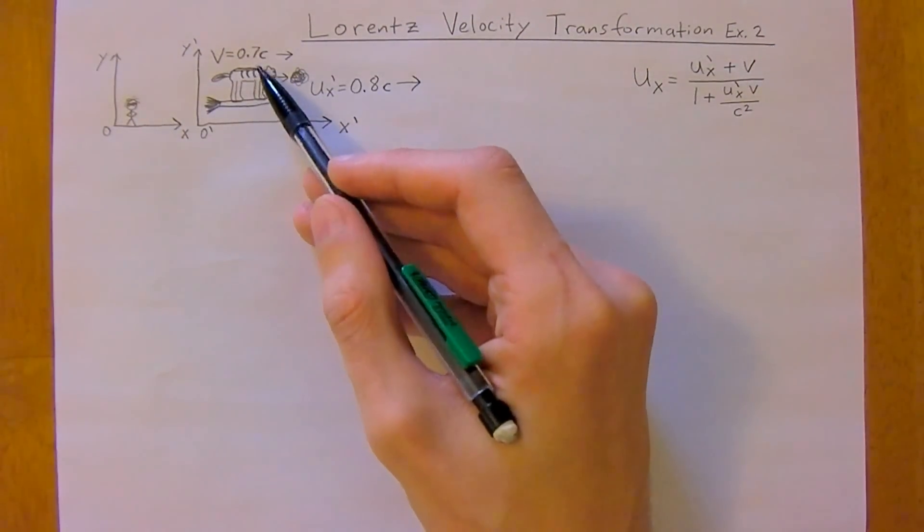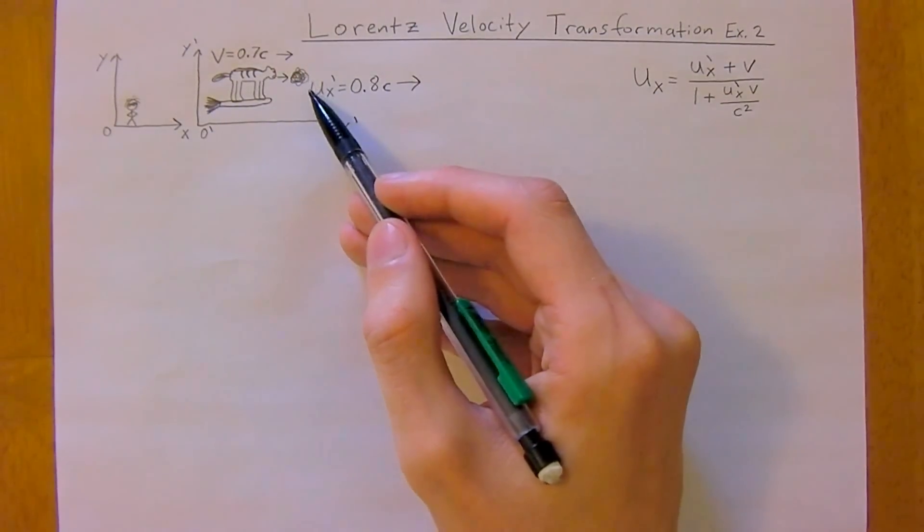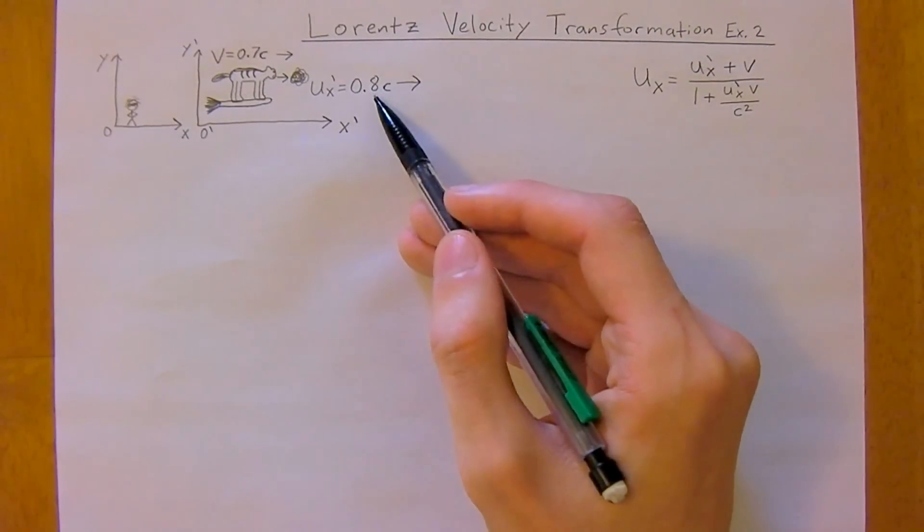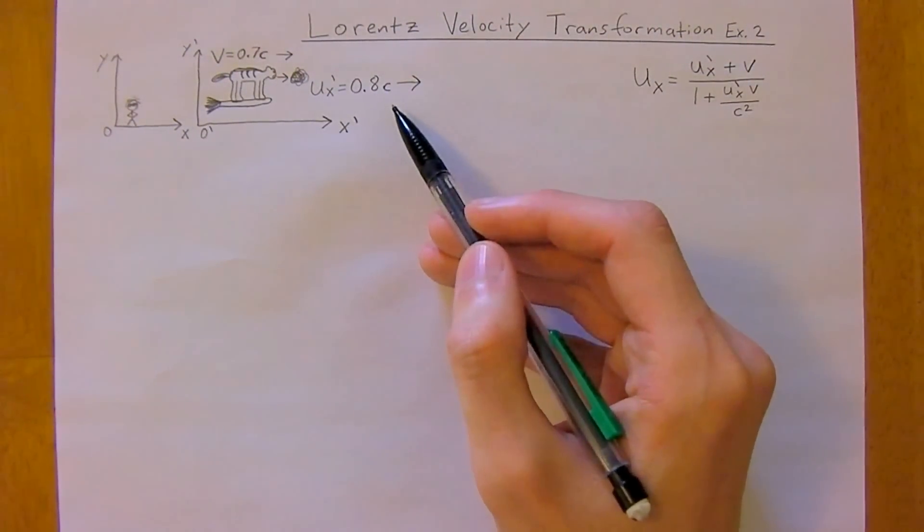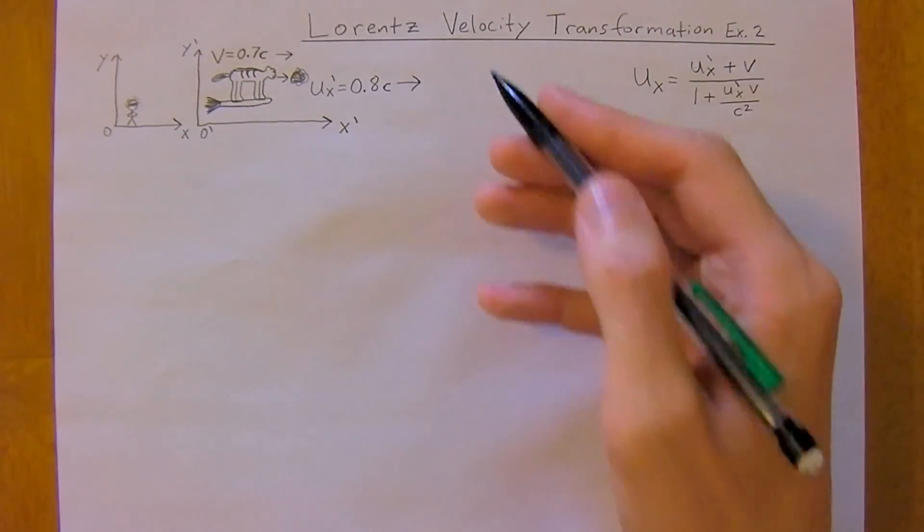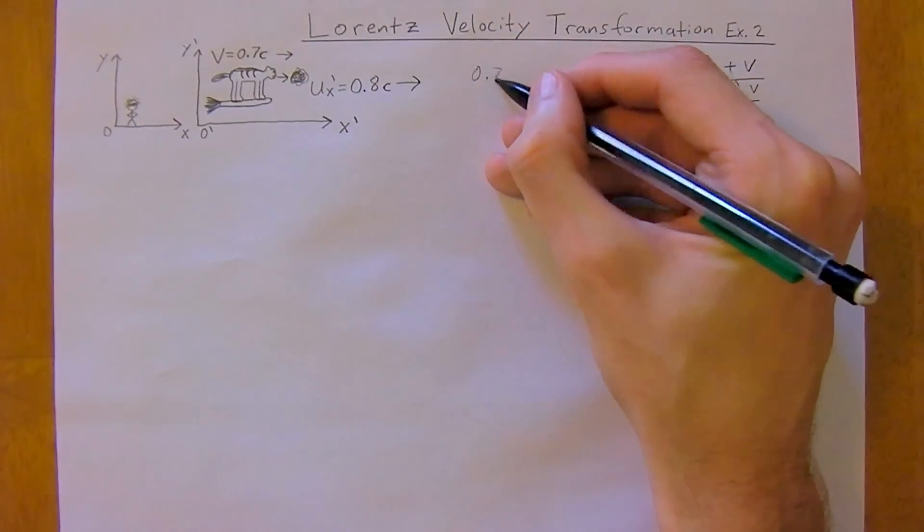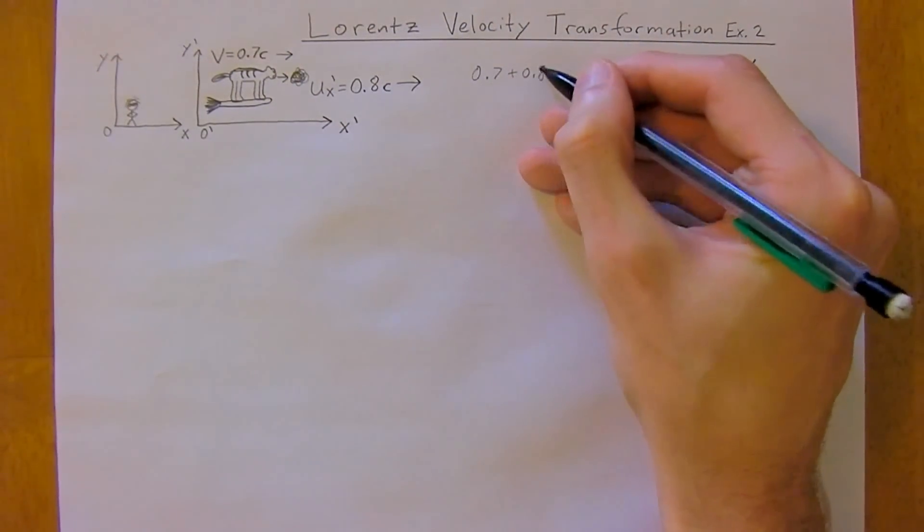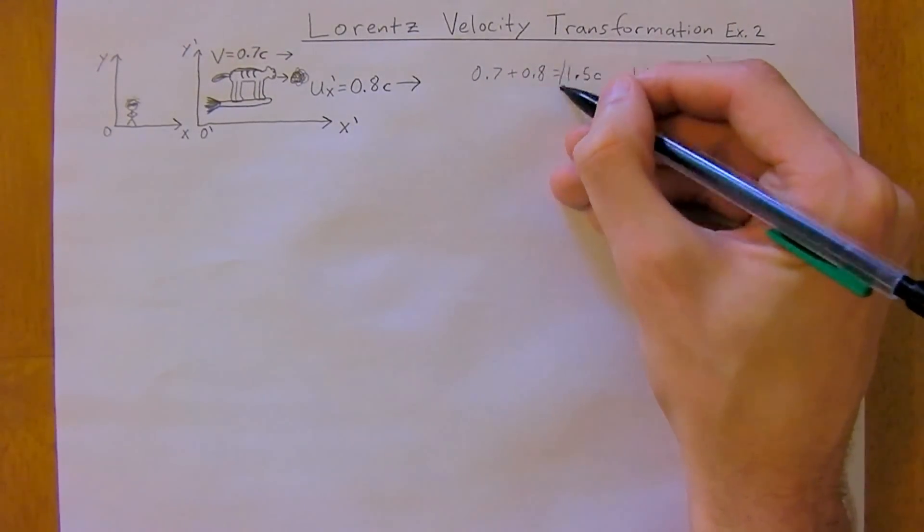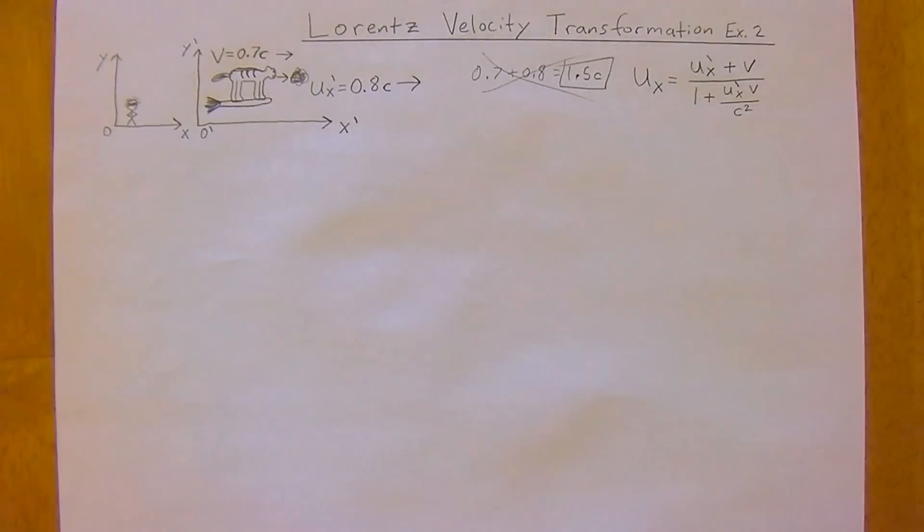So the cat's going at 70% the speed of light and then it coughs up a really big hairball and relative to the cat now the hairball is going at 80% the speed of light. So how would we work through this problem? The traditional way you know you do 0.7 plus 0.8 and you'd end up breaking the laws of physics which you cannot do with 1.5c. That is not good.